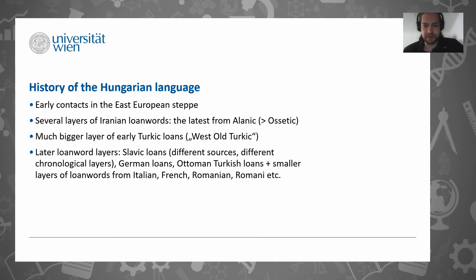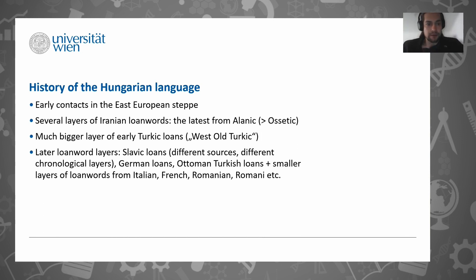About the language contact context of Hungarian: there are several layers of loanwords - different layers of Iranian loans, which were acquired in the East European steppe before the Hungarian language arrived in Central Europe in the early Middle Ages. And there is a much bigger layer of Turkic loanwords, which is actually even more important for the study of historical phonology, but there has been more work done on that than on the Iranian loans. And then there are various later loanword layers - words borrowed, for example, from the Slavic languages and from German in Central Europe.